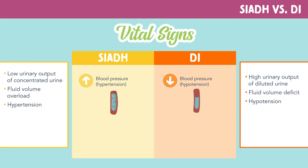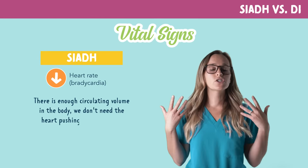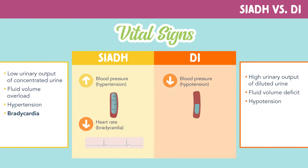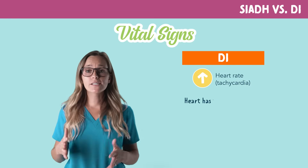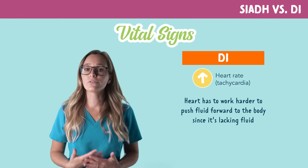Now let's look at heart rate. In SIADH, we know we have an increased blood pressure, but we will see a decreased heart rate called bradycardia. If there is enough circulating volume in the body, we don't need the heart pushing out more volume, so the heart rate will be decreased. But in DI, we see a decreased blood pressure and an increased heart rate called tachycardia. In DI, we are dehydrated, so the heart has to work harder to push fluid forward to the body since it's lacking fluid.